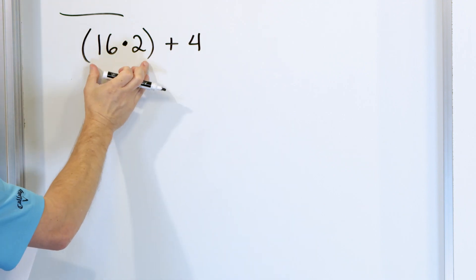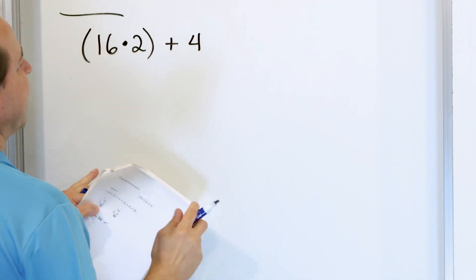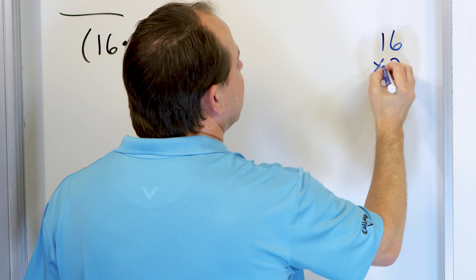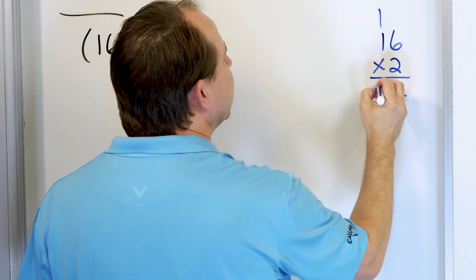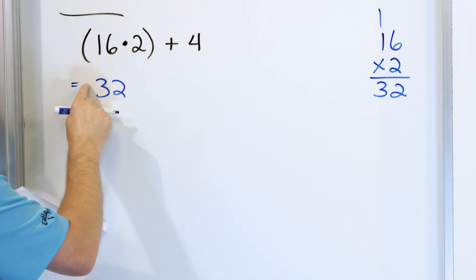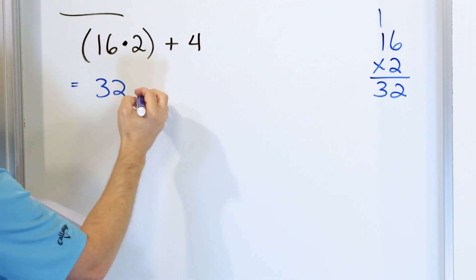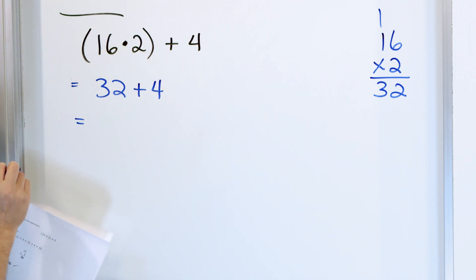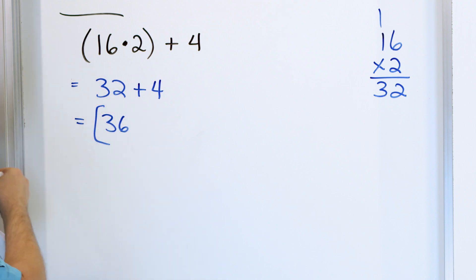What do we do first? We always do what's inside the parentheses — 16 times 2. You may not remember what 16 times 2 is, so go over and figure it out. 6 times 2 is 12, carry the 1, 1 times 2 is 2, one more is 3. So the answer is 32. The parentheses disappear once you do the operation, so it's 32 plus 4, which is 36. That's the final answer.